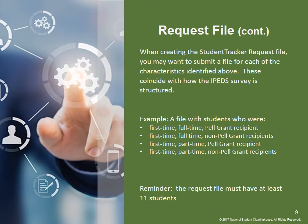When creating your request file, you may want to create four separate request files, each coinciding with how the IPEDS survey is structured. For example, one file could have students who were first-time full-time Pell Grant recipients, another could be first-time full-time non-Pell Grant recipients, and so on. Just a reminder that the request file must have at least 11 students in the file.